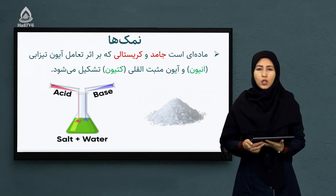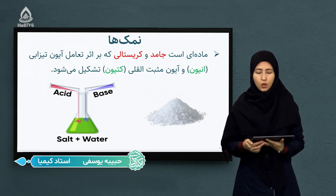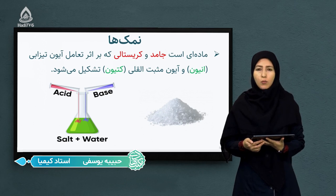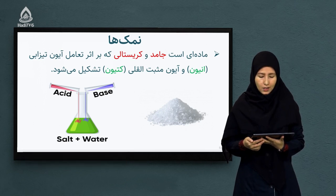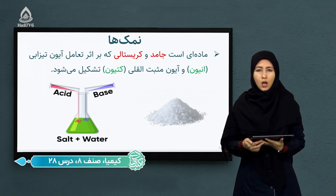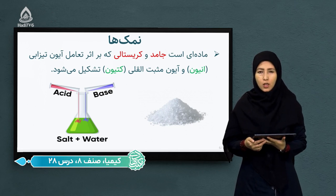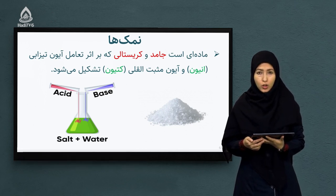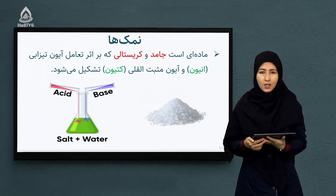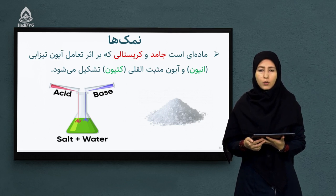نمک ها چه قسم مرکباتی هستند؟ شاگردان عزیز شما با نمک ها در محیط اطراف خود آشنا هستید. نمک ها به مرکباتی گفته می شود که جامد و کریستالی هستند و در اثر تعامل یک تیزاب با یک القلی تشکیل می شوند. همانطور که در شکل مشاهده می کنید ساختار جامد و کریستالی نمک نمایش داده شده است.